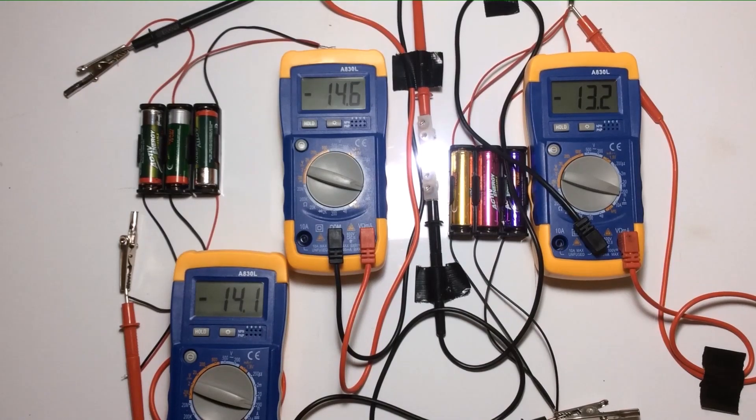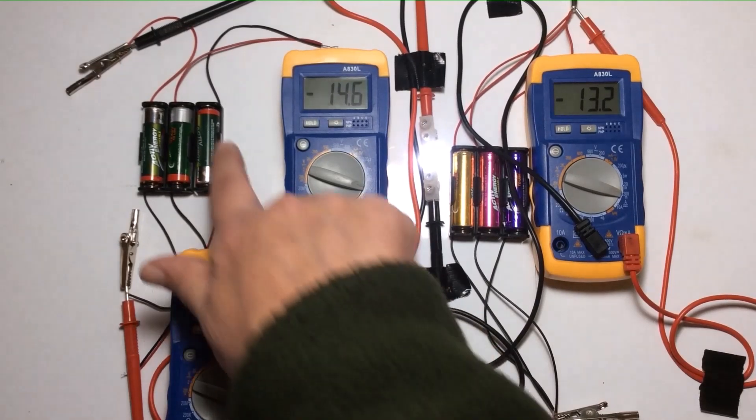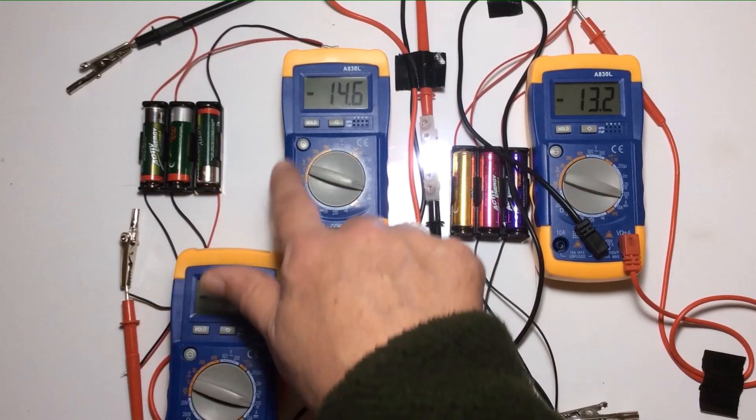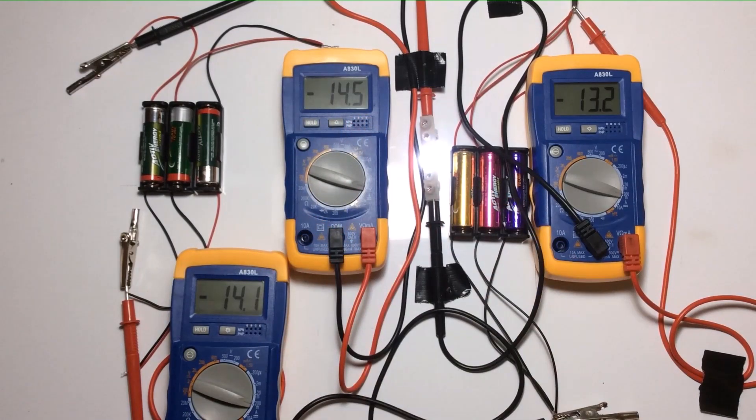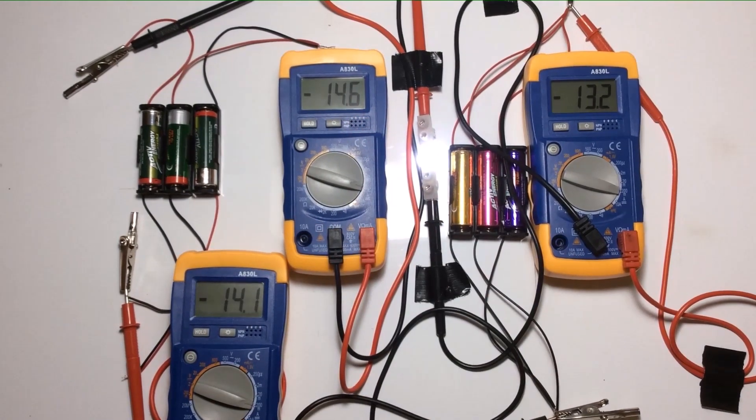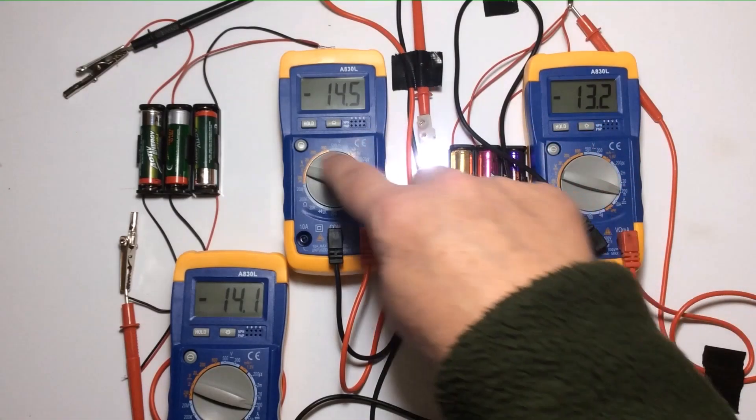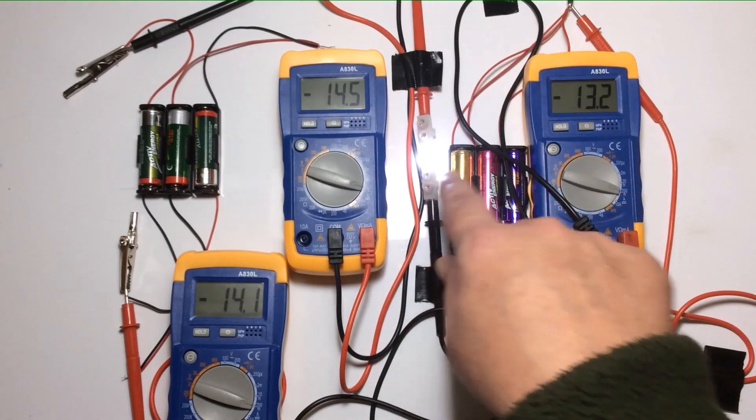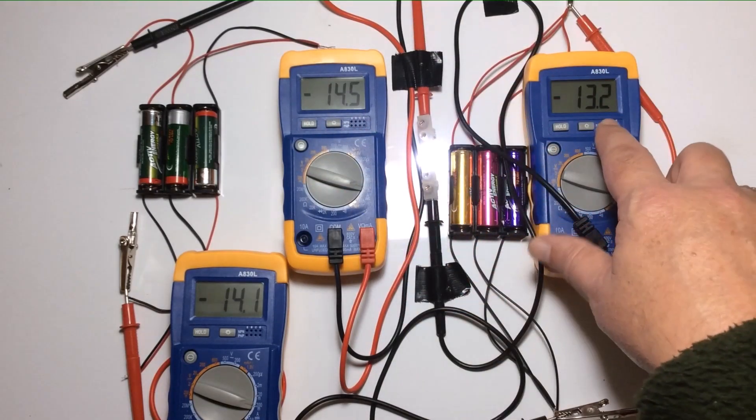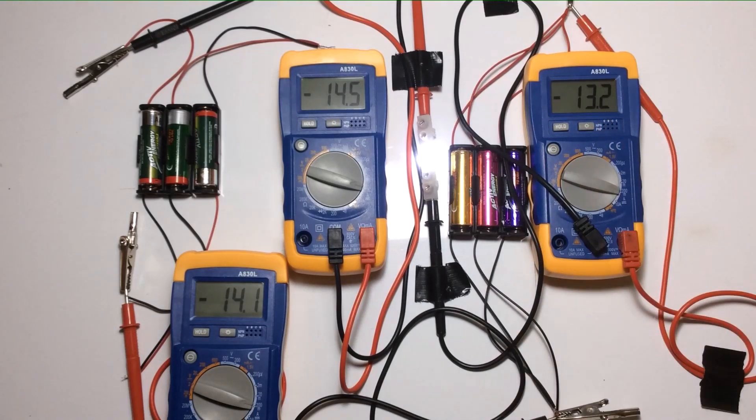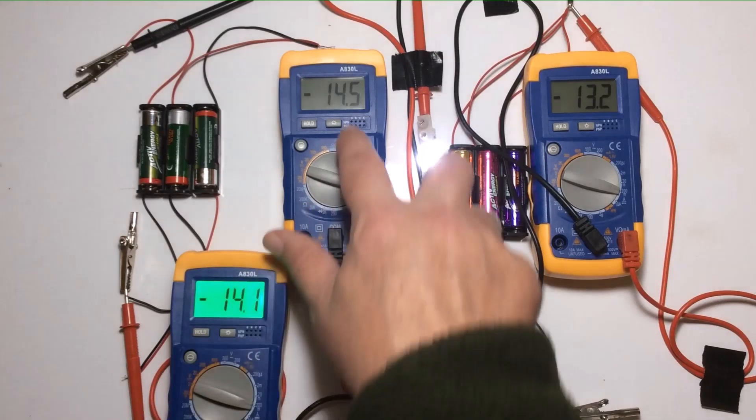But even with that in mind, so now we see coming out of the primary battery bank we have 14.6 milliamps coming out of the load. So that's going into the load. Then coming out of the load is 13.2 milliamps.